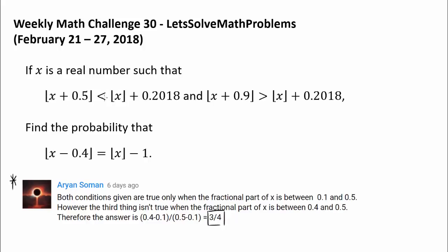The problem: floor of x plus 0.5 is less than floor of x plus 0.2018. Since 0.2018 is less than 1, this is telling us that floor of x plus 0.5 is equal to floor of x. These two statements are identical, because floor of x plus 0.5 has to be either floor of x or floor of x plus 1, depending on the fractional value of x.